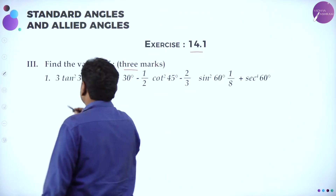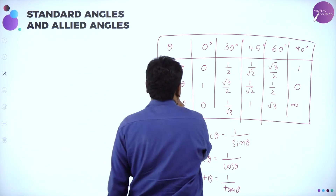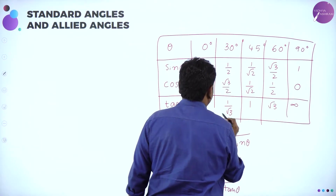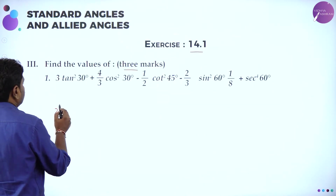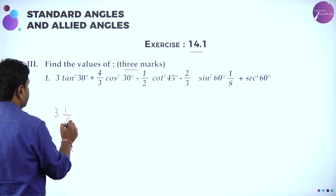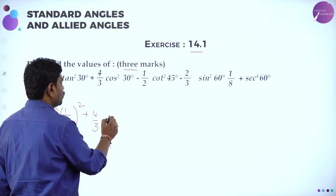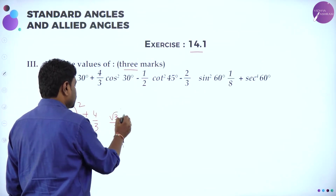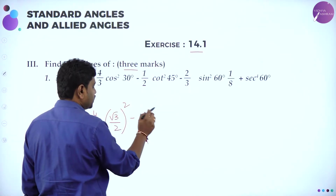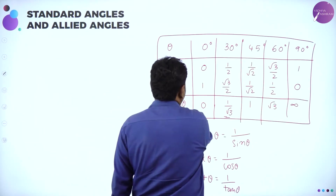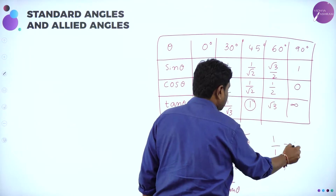Now going ahead: 3 tan² 30. What is tan 30? From the angle table, tan 30° = 1/√3. So (1/√3)², which is 1/3. Plus (4/3) × cos² 30: cos 30 = √3/2, so cos² 30 = (√3/2)². Minus (1/2) cot² 45: cot 45 is reciprocal of tan 45. tan 45 = 1, so reciprocal is also 1, and 1² = 1.